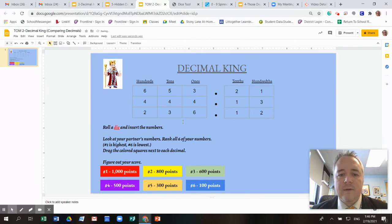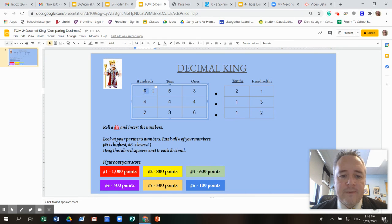So once all the boxes have been filled in, what you're going to do is you have to read every number. So read it across like this says 653 and remember the decimal point, you say the word and 21 hundredths, right? Since we have two digits here, it's always hundredths, 444 and 13 hundredths, 236 and 12 hundredths. So you and your partner both do that.